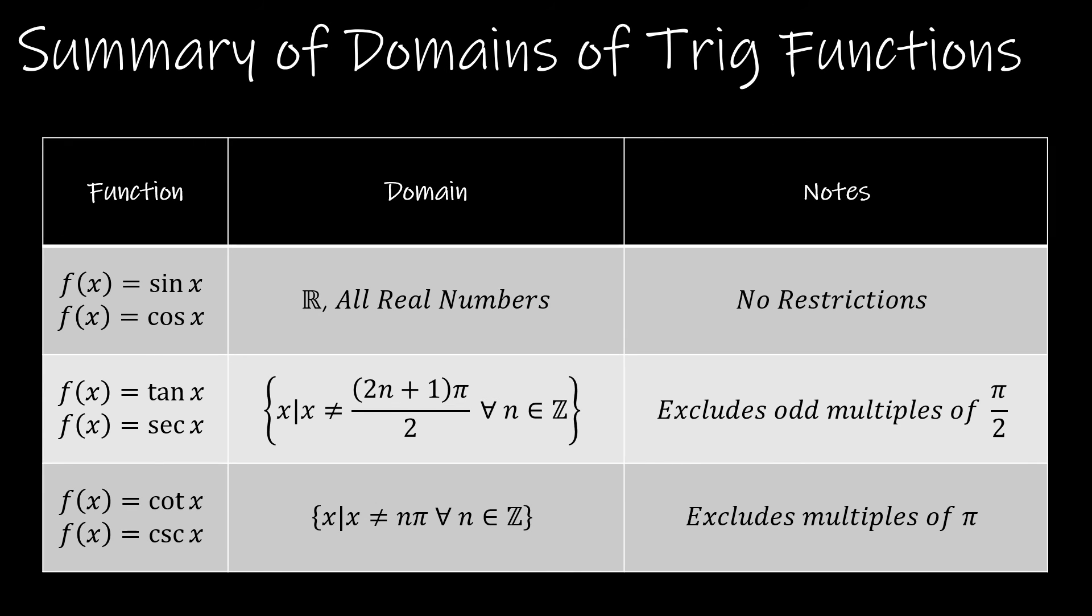So again, this is just a summary of the domains of the trig functions. For sine and cosine, there are no restrictions. So the domain is all real numbers. For tangent and secant, the restrictions are odd multiples of pi over 2. And so this is just a fancy way that you can write it in set builder notation. All of the x's such that x is not equal to 2n plus 1 pi divided by 2 for all of the n values that are integers.